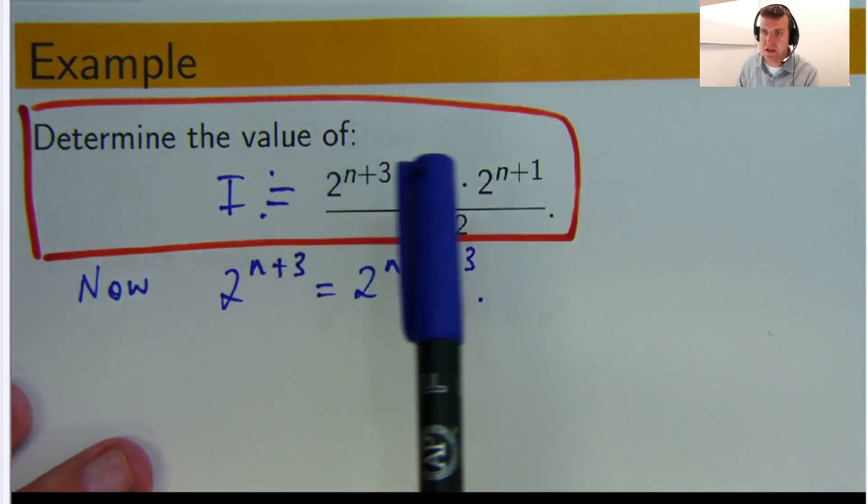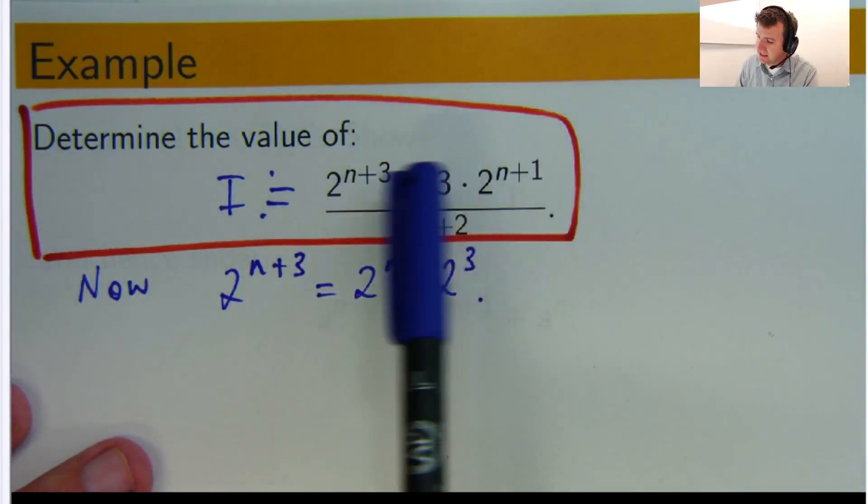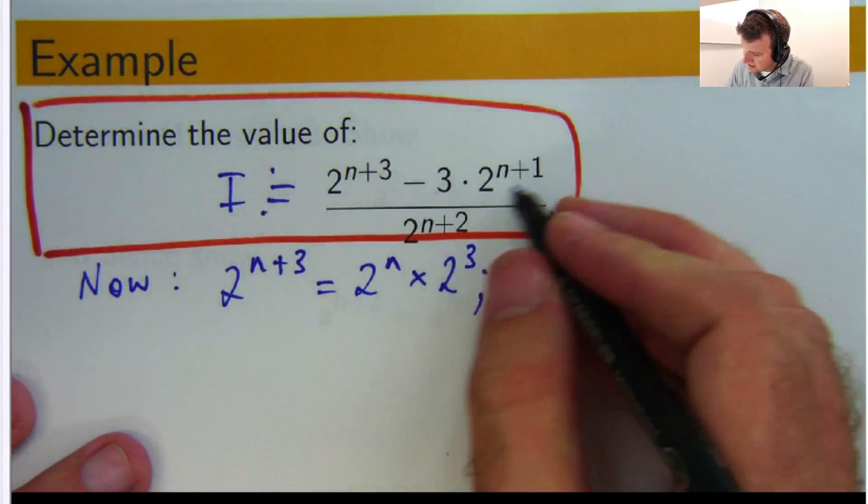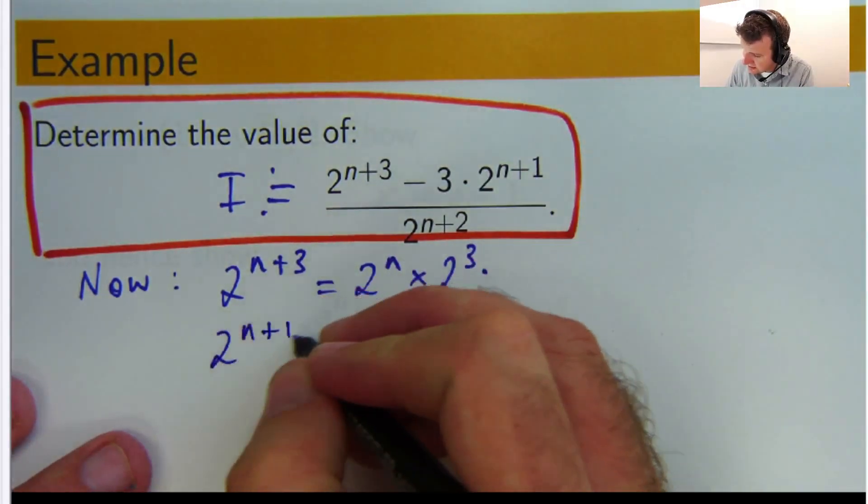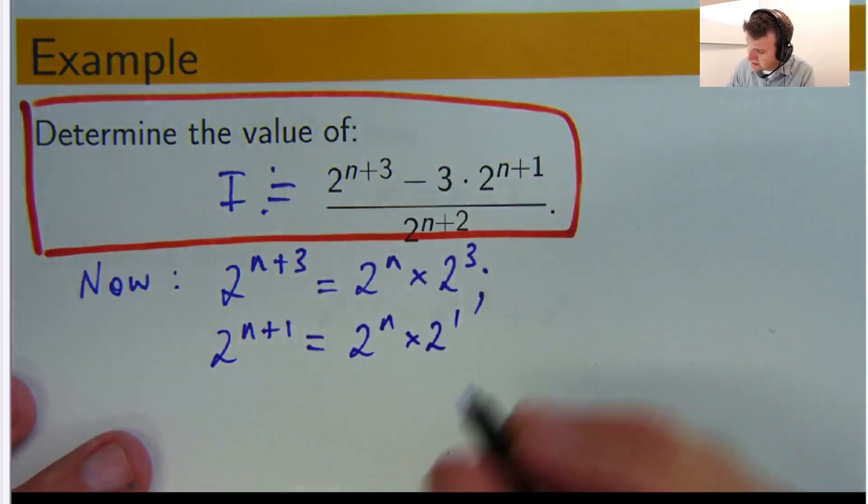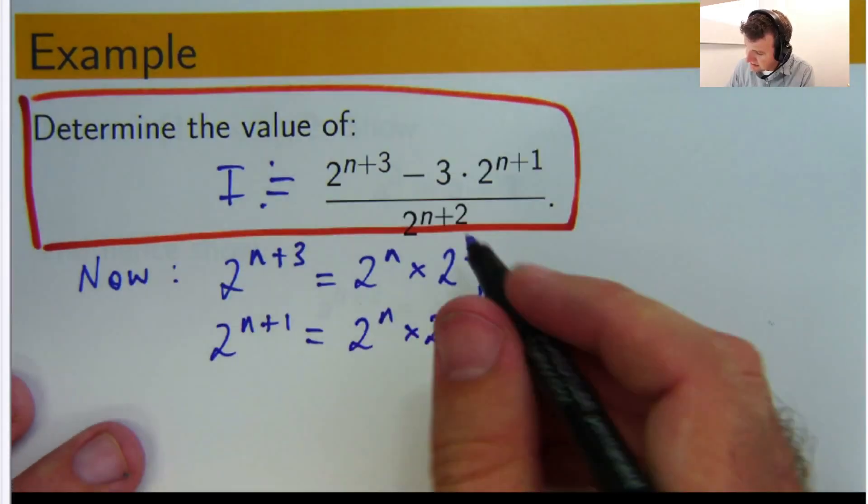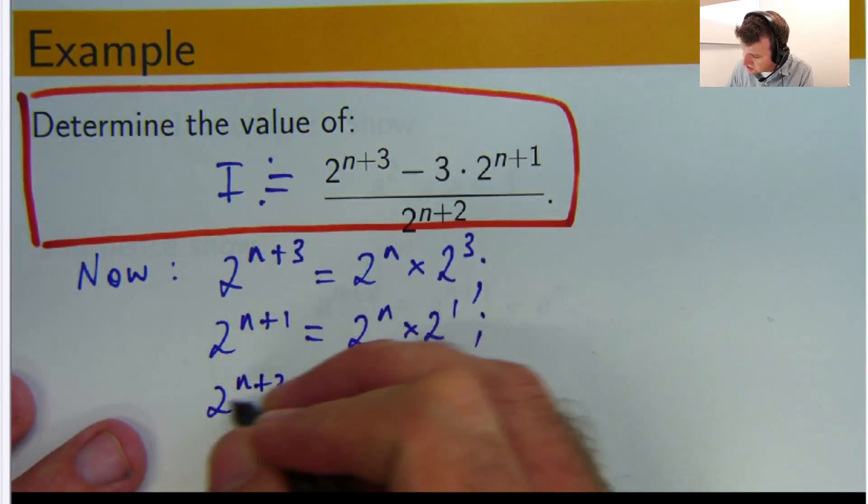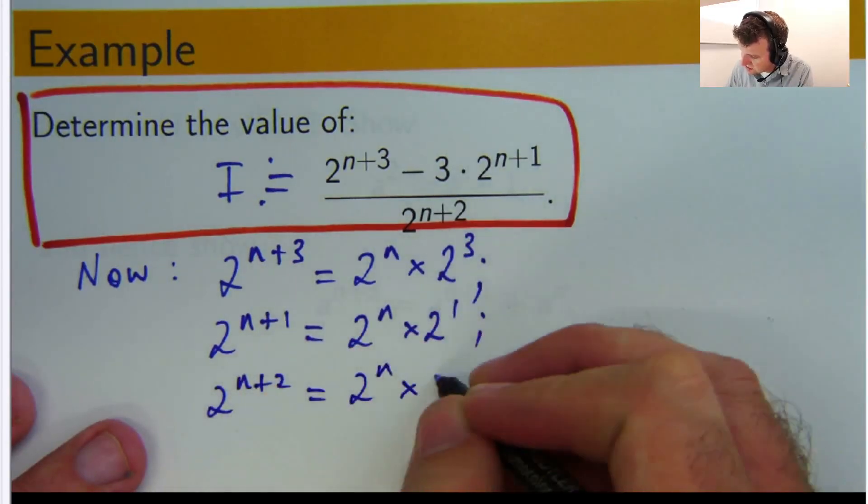What I'm trying to do is get a common factor of n in the top. Okay? 2 to the n plus 1 equals 2 to the n times 2 to the 1, which is just 2. 2 to the n plus 2 is just 2 to the n times 2 squared.